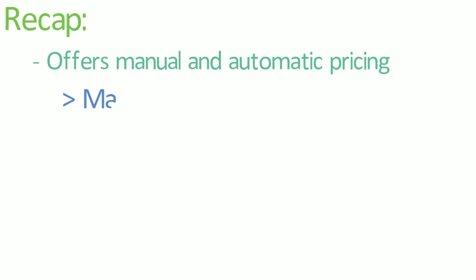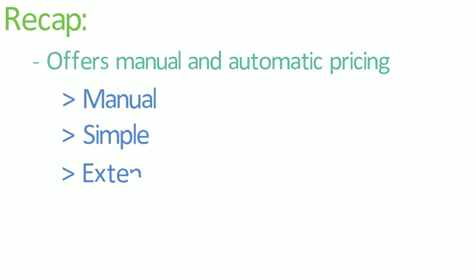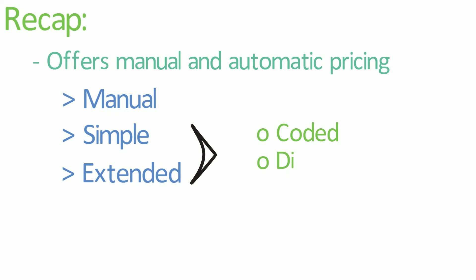To recap, Syspro offers both manual and automatic pricing solutions. It includes methods like manual pricing — as the name suggests, this requires operators to manually enter prices and discounts — simple pricing and extended pricing, which along with simple pricing is an automated pricing method where prices are used based on what has previously been captured. Within the simple and extended pricing methods, there are also coded, discounted and quantity discounted pricing codes, each fulfilling a certain function in order to streamline the process.